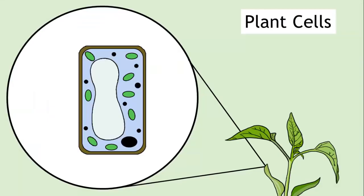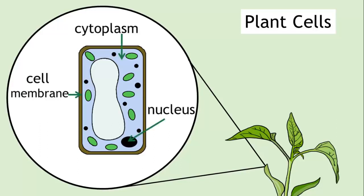Plant cells. Plant cells contain the structures that animal cells contain, that we've just discussed—the nucleus, the cytoplasm, and the cell membrane—but they also include lots of extra structures.